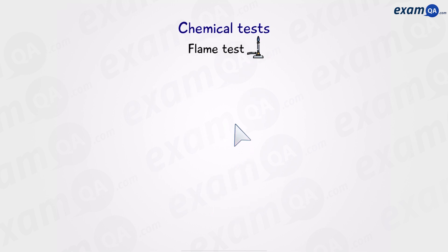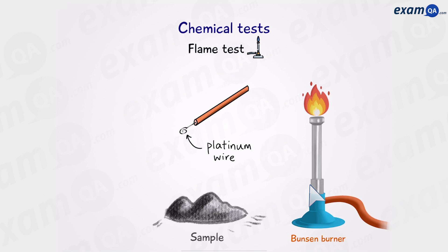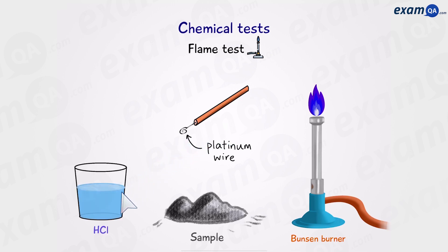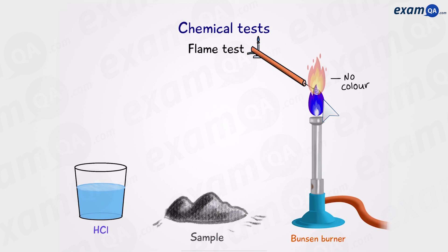Starting with the flame test. Let's say I have a sample of an unknown metal and I want to identify which ions are in this sample. I'm going to get a wire and a Bunsen burner. The first thing I'm going to do is open this part of the Bunsen burner so that oxygen can enter and we have complete combustion, giving us a blue flame. Before we place our wire into the sample we have to make sure that it's clean. So we're going to dip it in some dilute hydrochloric acid and then place it over the blue flame until there's no more colour visible. This will remove any previous metals that were on the wire as an impurity.